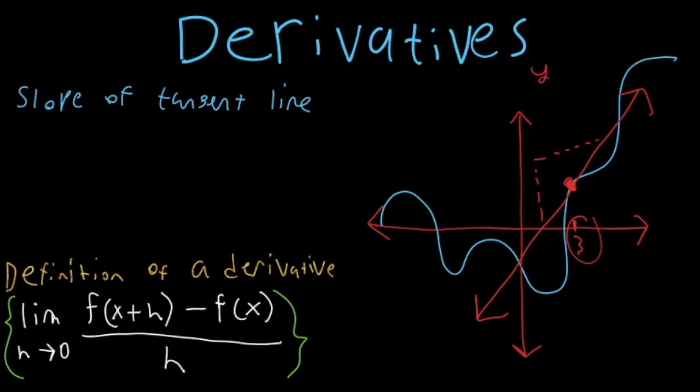So whatever the rise over the run is, and if you remember correctly from pre-calculus, you're going to have this equation right here to get your slope, which is y-final minus y-initial over x-final minus x-initial. Now this is also called something else. This is called a rate of change.